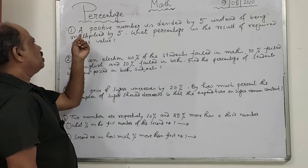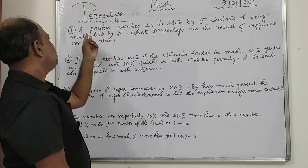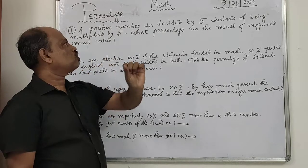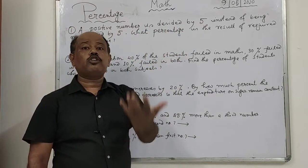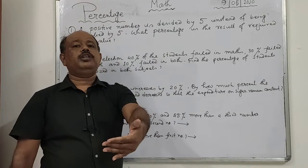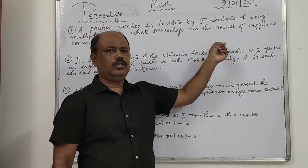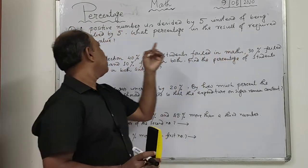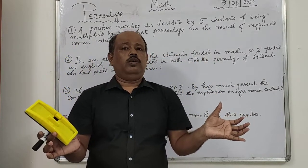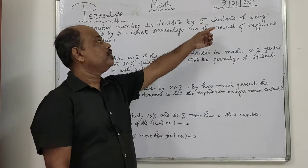Read with me. First question: A positive number is divided by five instead of being multiplied by five. What percentage is the result of the required correct value? Result means what you got. The correct value is what should have been the correct answer.